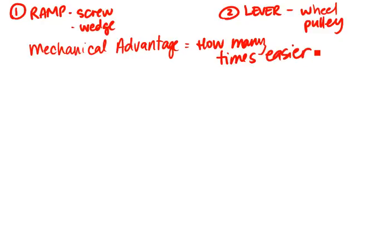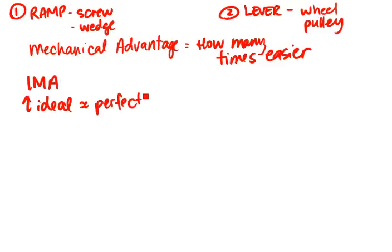The first type of mechanical advantage we're going to look at is ideal mechanical advantage. Remember, ideal is similar to perfect, which means in a perfect world without any friction, you can calculate the ideal mechanical advantage. The formula for this is the input distance divided by the output distance.